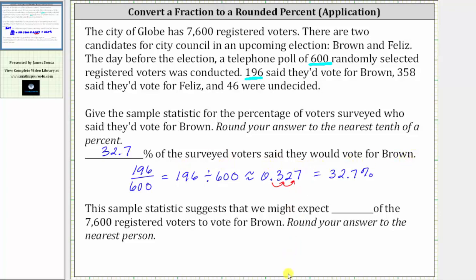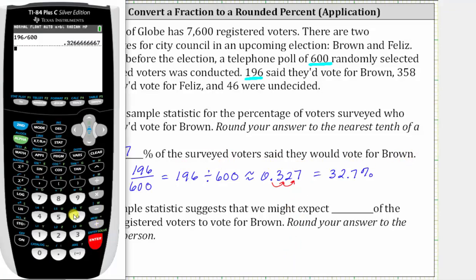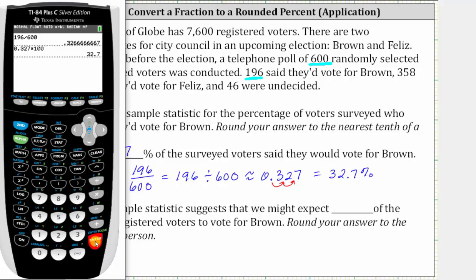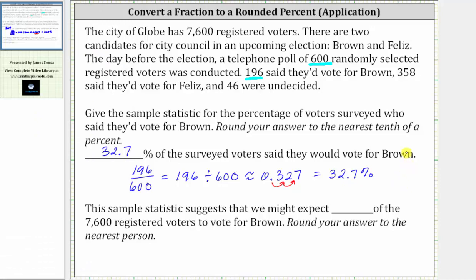Notice how if we go back to the calculator, if we enter 0.327 and multiply by 100, we do get 32.7, giving us 32.7%.